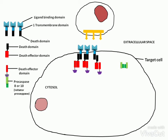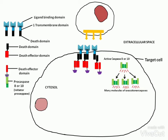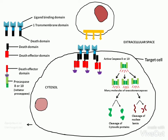Then the activated caspase-8 and caspase-10 cleave and activate many molecules of executioner caspases, producing a proteolytic caspase cascade. Then the executioner caspases cleave cytosolic proteins and nuclear lamins, leading to the apoptosis of the target cell.